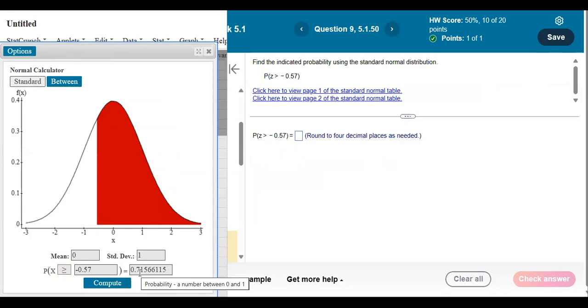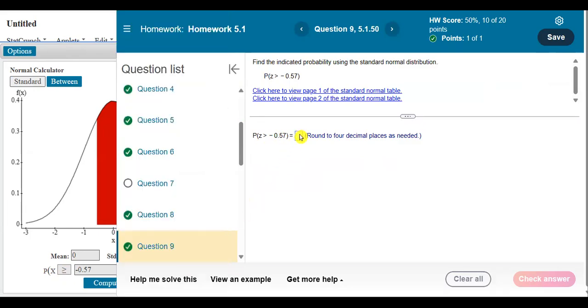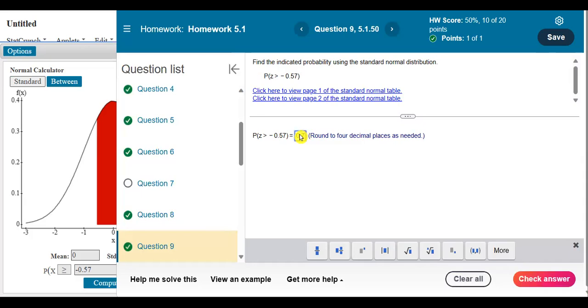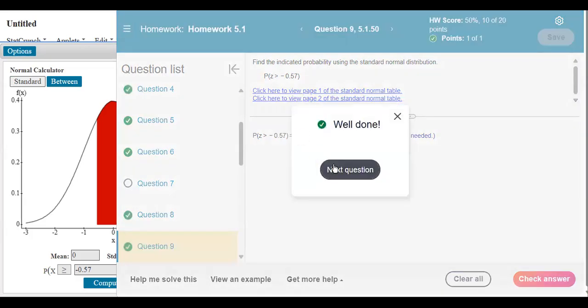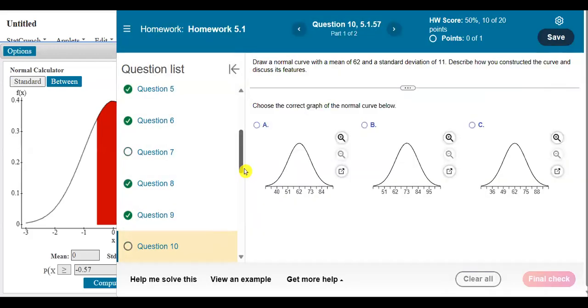And here's our area. Looks like I'm going to get 0.7157 if I round that. Let's see if we have any more on here.